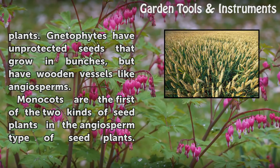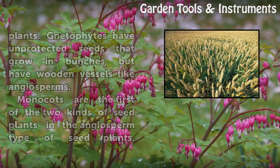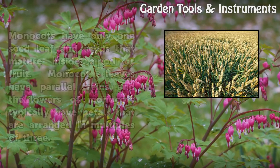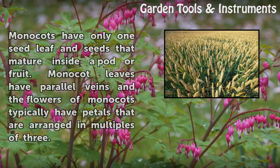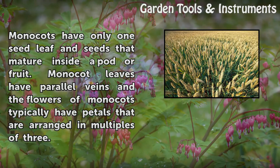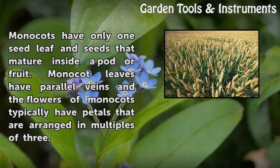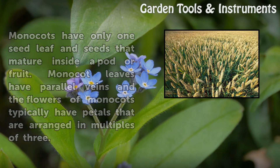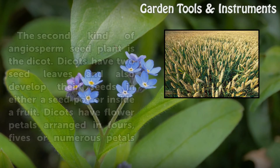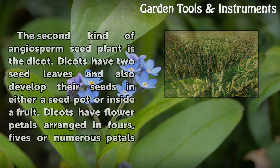Monocots are the first of the two kinds of seed plants in the angiosperm type. Monocots have only one seed leaf and seeds that mature inside a pod or fruit. Monocots have parallel veins, and the flowers of monocots typically have petals that are arranged in multiples of three.